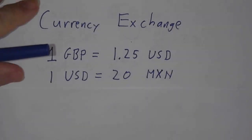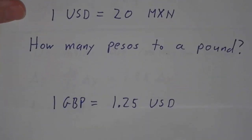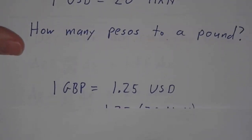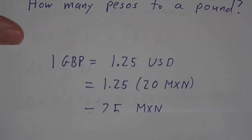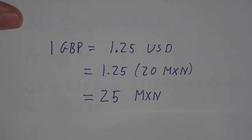This is a pretty easy problem. You say a pound is worth $1.25, and $1.25 is 20 pesos. So you just multiply it out, and you get that a pound is worth 25 pesos.